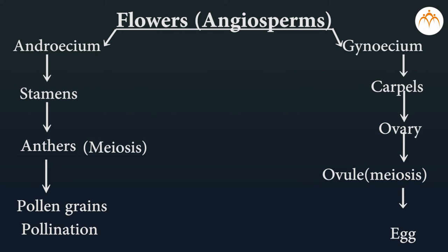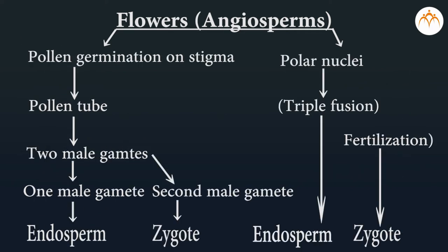Let's revise this process quickly through a simple flowchart. Flowers have androecium and gynoecium, which have stamens and carpels. Stamens have anthers, which undergo meiosis to produce pollen grains. The ovary contains ovules, which also undergo meiosis to produce polar nuclei. Pollination leads to pollen germination on the stigma, forming a pollen tube. The pollen tube carries one male gamete for fertilization and a second male gamete for triple fusion, producing the zygote and endosperm respectively.